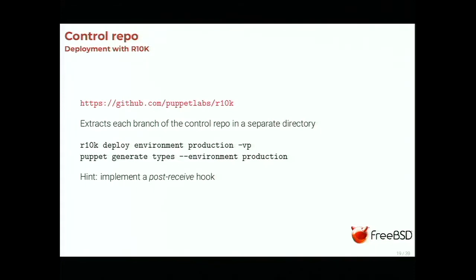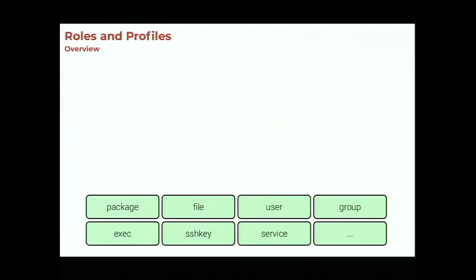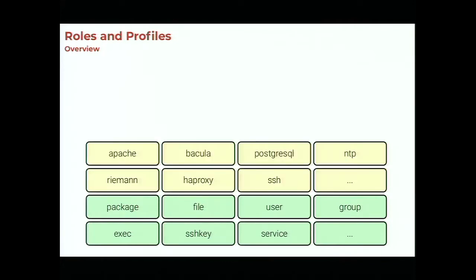Once you have your control repo and have moved your files into its manifest directory, you'll notice the control repo also has a site directory. This allows you to use the role and profile pattern, which is a big part of what people use with Puppet. To sum up: we have resources provided by Puppet — packages, files, users, groups, etc. Above this we add an abstraction layer with modules, which allows us to manage Apache, Bacula, PostgreSQL, etc.